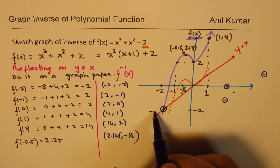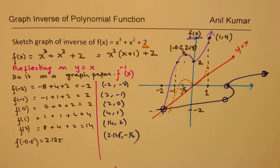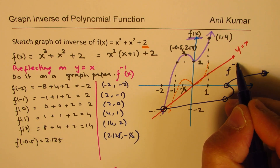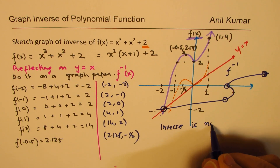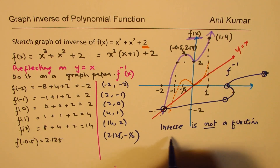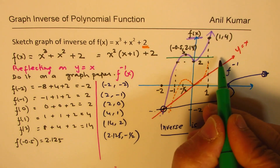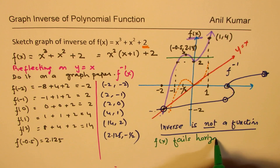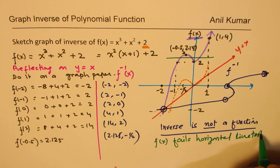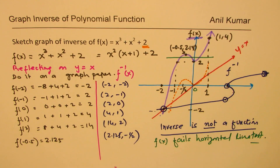Now let's join these points. We start from here and the curve moves kind of like this — going this way and then like this. That is our inverse. And definitely it is not a function, so in this case the inverse is not a function. That was clear right from the beginning: since the function f(x) fails the horizontal line test, its inverse is not a function. If you have graph paper to plot these points it would be much better, but for an examination this is a good enough sketch.